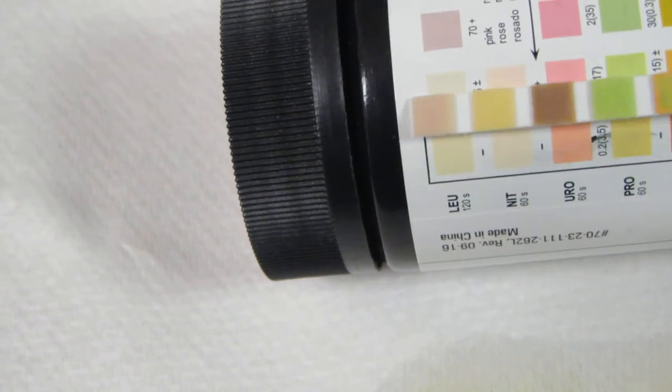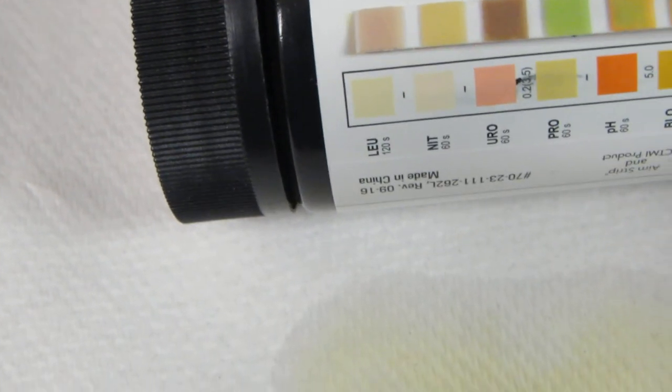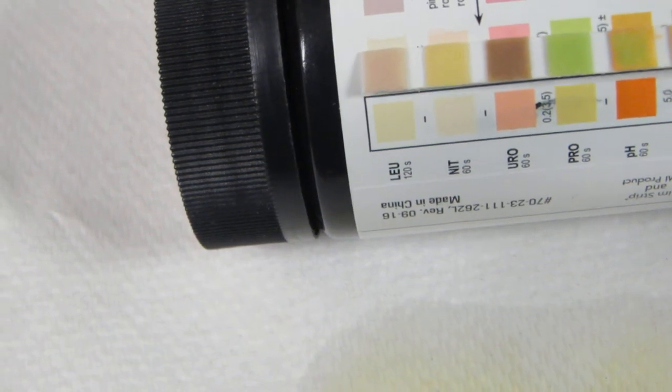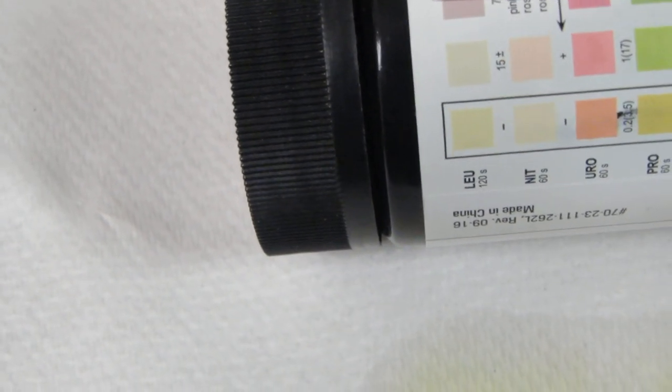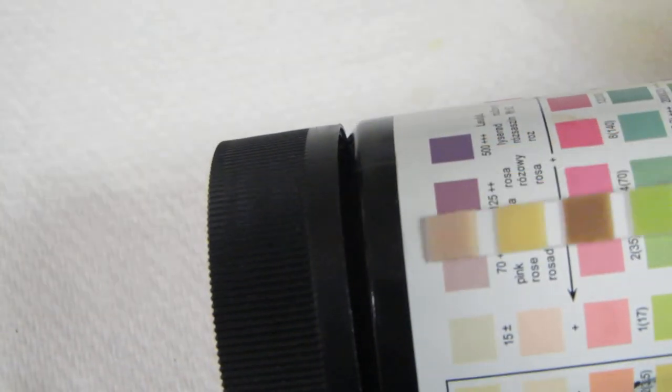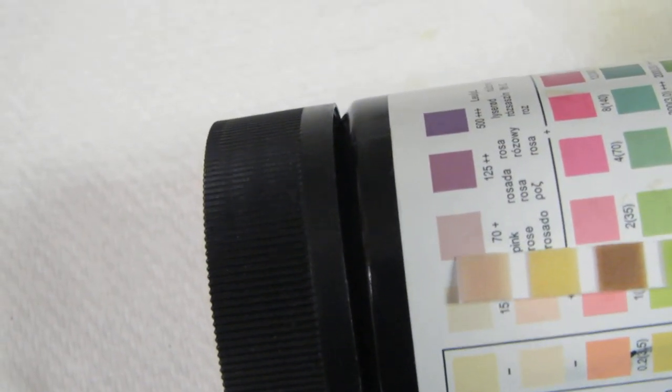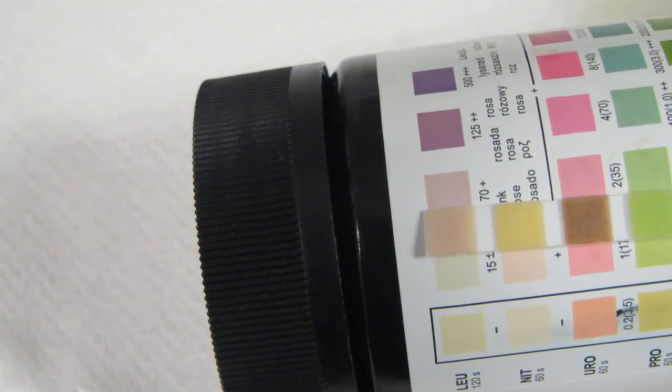Let's see, urobilinogen. That one is invalid as well because of the age and oxidation of these strips. No nitrates. And oh my goodness, look, we got a little bit of leukocytes going on here. Right there, about 70 plus.